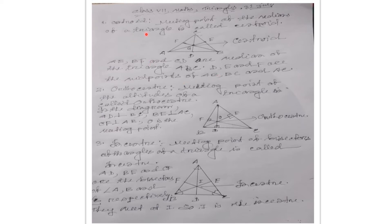Dear students of class 7, now I am going to explain centroid, orthocentre and incentre. What is centroid? What is orthocentre? What is incentre? Centroid means what? The meeting point of the medians of a triangle is called centroid.